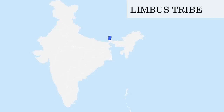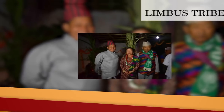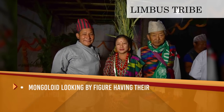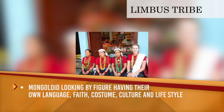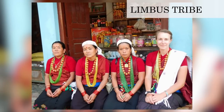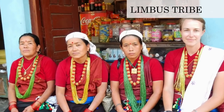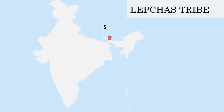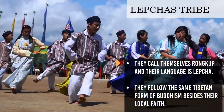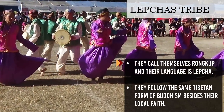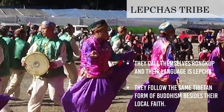Limbus Tribe: they are one of the indigenous tribes of Sikkim belonging to Nepali ancestry. Mongoloid in features, they have their own language, faith, costume, culture and lifestyle, but they are farmers by profession. Lepcha Tribe: they are one of the indigenous tribes of Sikkim. They call themselves Runkab and their language is Lepcha. They follow the Tibetan form of Buddhism besides their local faith.